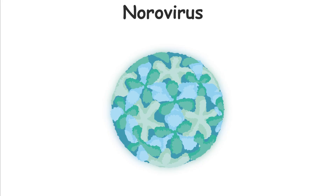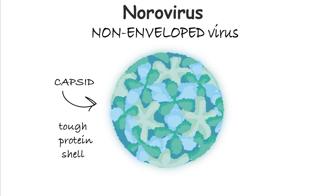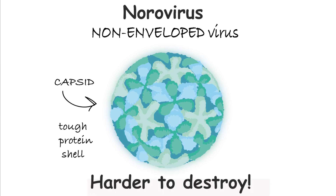A key feature that defines the norovirus is its classification as a non-enveloped virus. This means that, unlike some other viruses, norovirus doesn't have an outer lipid envelope. It's protected by a tough protein shell called a capsid, which gives it extra resistance to various environmental conditions and many common disinfectants.